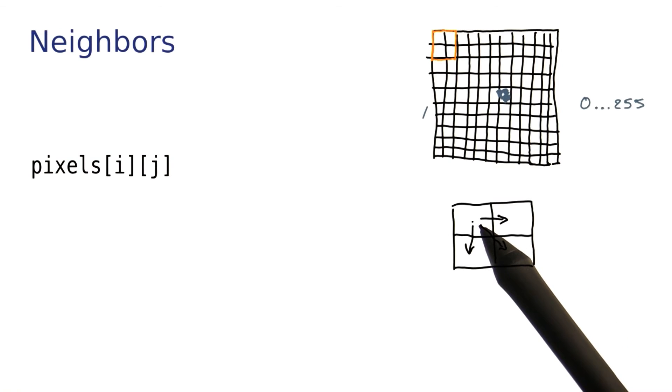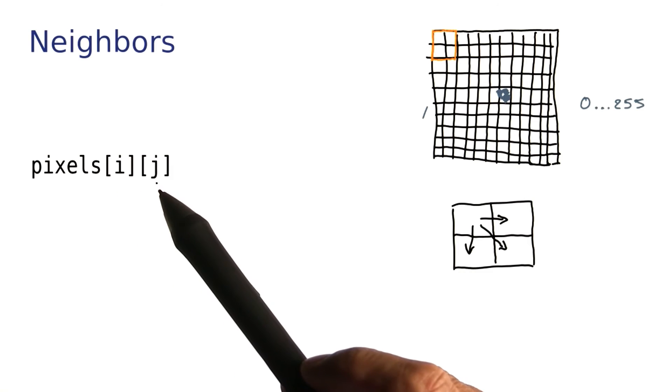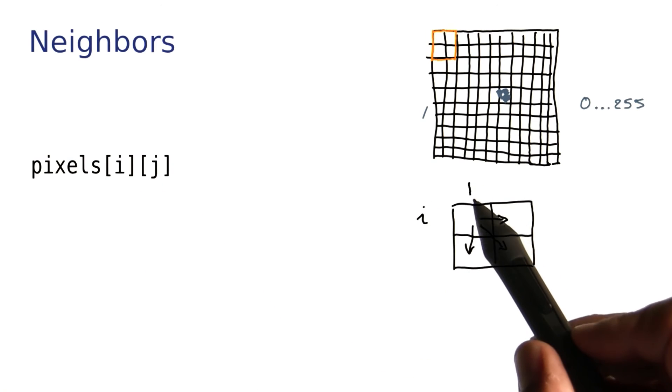So let's assume the one that I'm starting with is pixels[i][j]. That means my row is i, and my column is j.